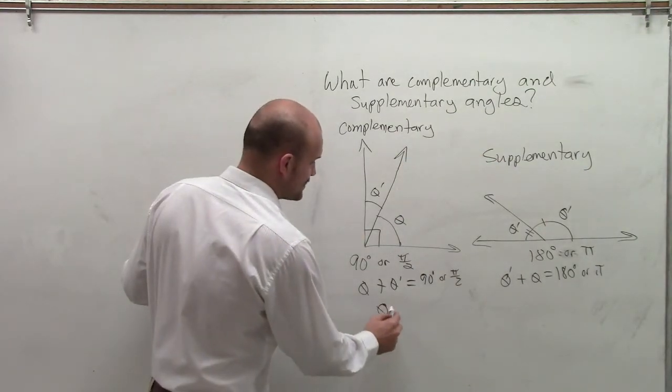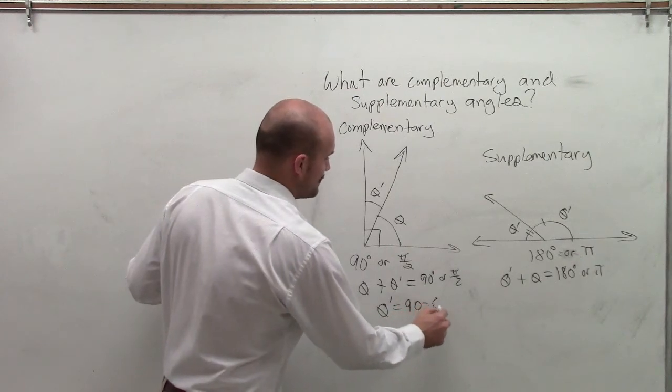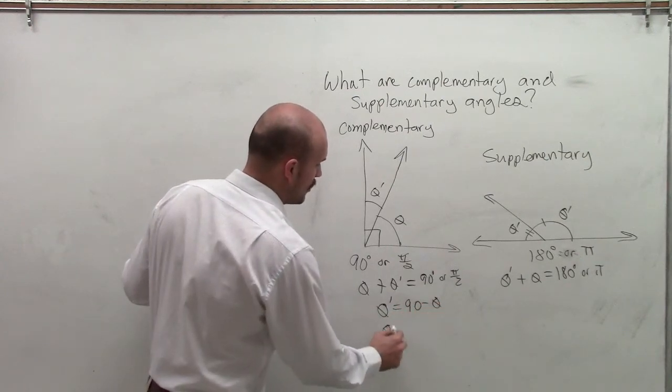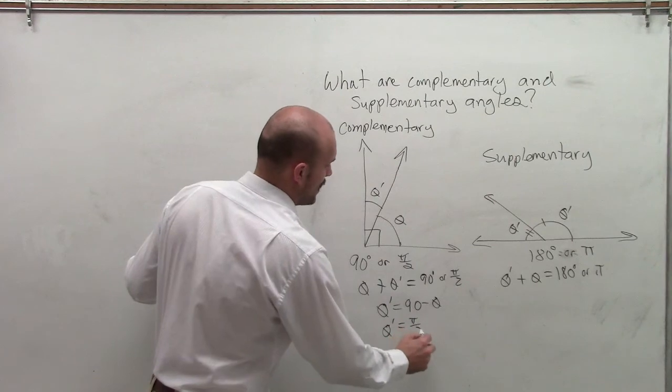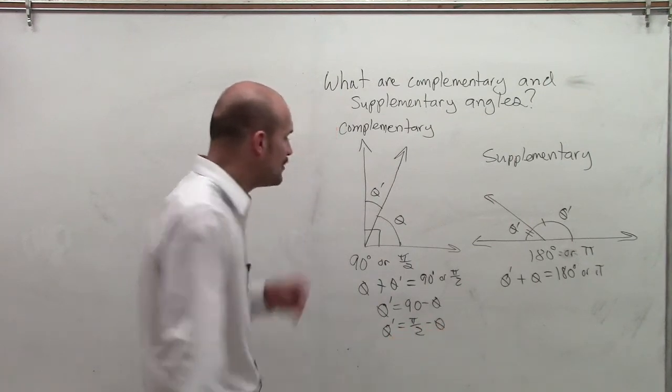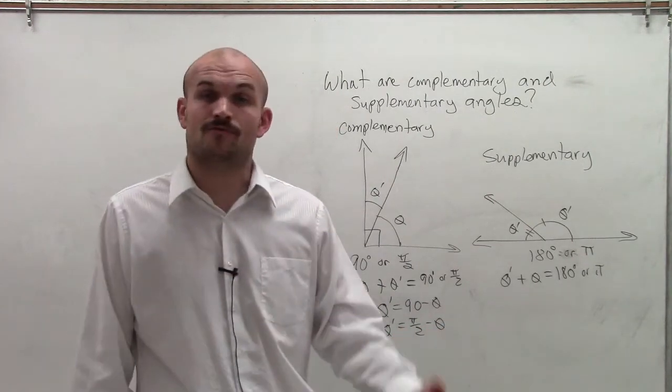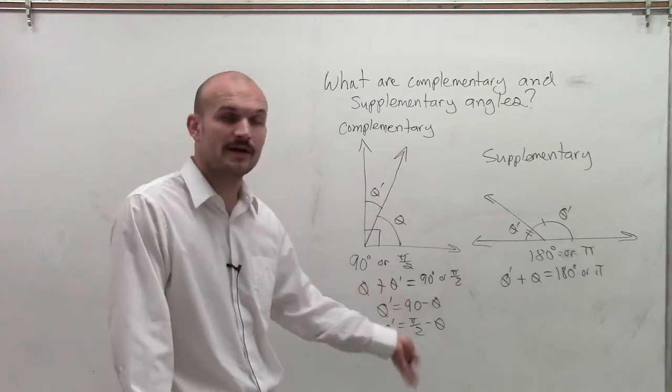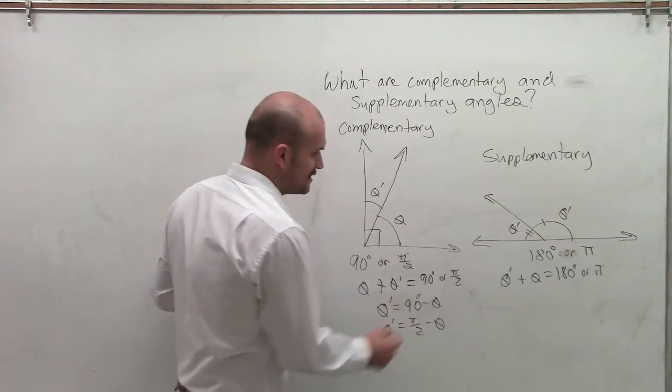in our equation we could say theta prime equals 90 minus your angle theta, or theta prime equals pi over 2 minus theta. And remember, it's all going to depend on if your angle is in radians, you'd use this one, or if your angle is in degrees, you'd use this equation.